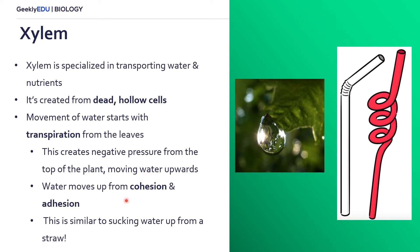The actual process that moves this water upwards with this negative pressure is cohesion and adhesion. Cohesion is what we use to define water molecules sticking to each other — so in a water droplet, all the water molecules in the center are sticking together. Adhesion is water molecules sticking to other molecules, so at the tip of a water droplet the molecules are sticking to the leaf. You can think of this movement similar to sucking up water from a straw — as you suck from the top, that creates negative pressure and the fluid moves upwards.